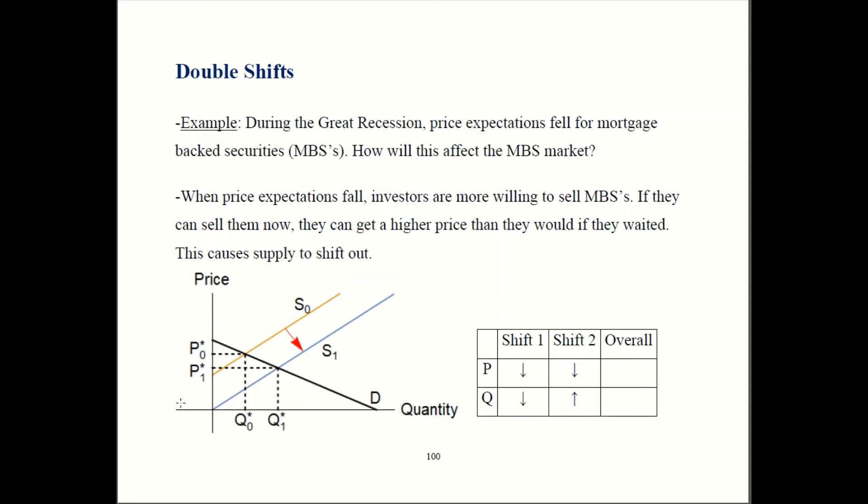So supply shifts out to S1 from S0. Here's what that does to price and quantity. Old equilibrium is where demand meets the old supply curve. That's here at P0 star. The new supply curve meets demand out over here. Price has now gone down to P1 star. So price goes down. So we get another down arrow here for price.